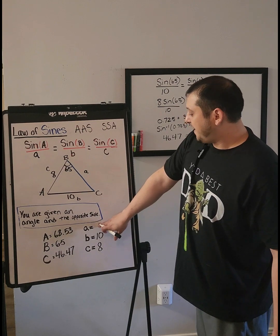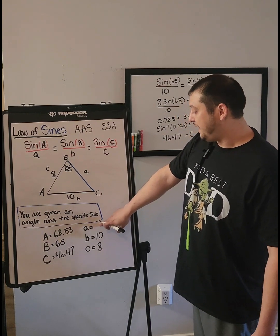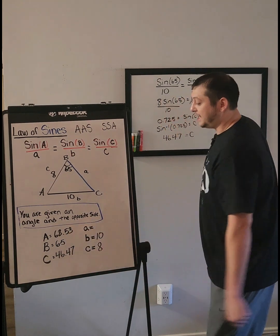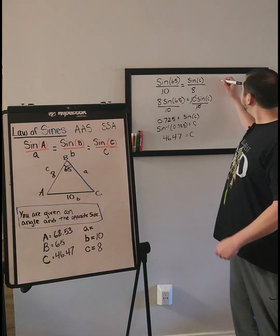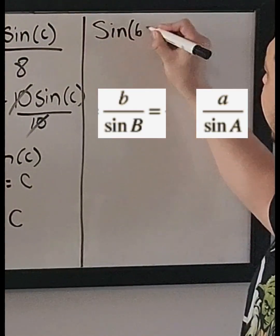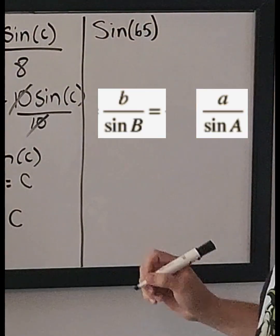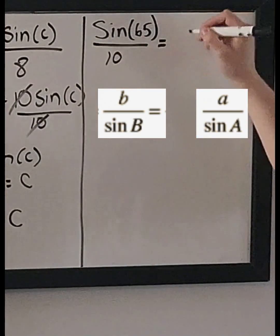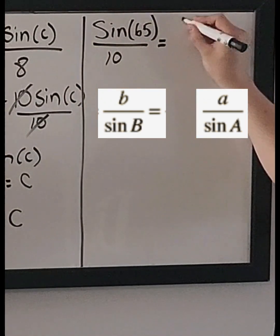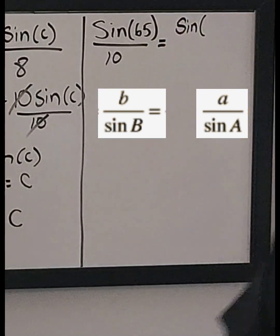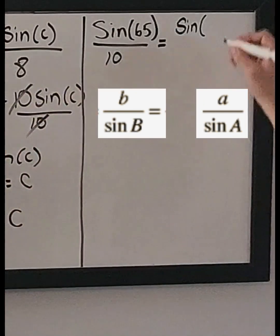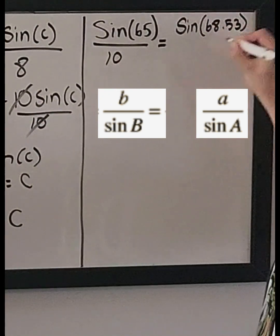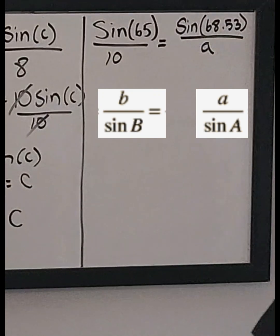And I'm going to find side A using the same method, except we're given an angle, not a side. So how I would do that is sine of 65 over 10 equals the sine of A, which we know what A is. A is 68.53 over the side A, which is the unknown.